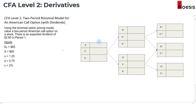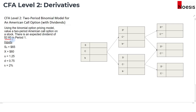In this video, we are going to value a two-period American call option on the stock. For this stock, there is an expected dividend of $2.60 in period 1, indicated by the red arrow. We'll later on see that with a dividend, it may actually motivate the long call option holder to exercise early.